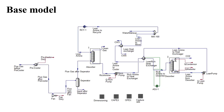Here is one screenshot from the HYSYS model that we would like to optimize. The main parts are the fan, absorber, lean heat exchanger, lean-rich heat exchanger, pumps in the process, and the stripper which has the condenser and reboiler. In this project we try to optimize these parts by using the HYSYS spreadsheet.